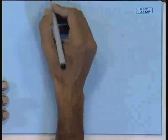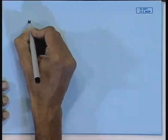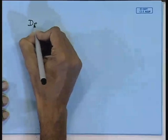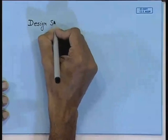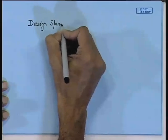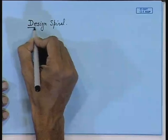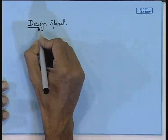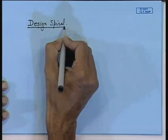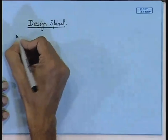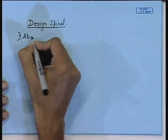Number one, which I have already talked about, is the design spiral. These are actually specialized structures. They are fixed structures and they do not have any ship-shaped form. So number one characteristic is the absence of ship-shaped form.